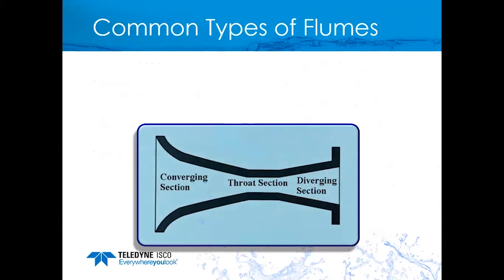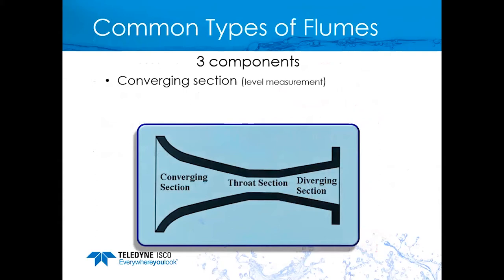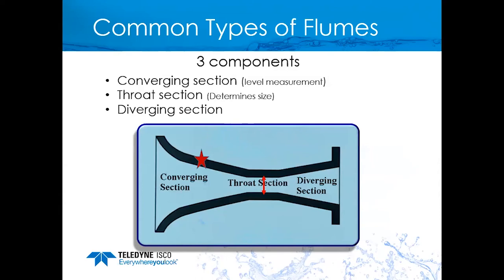The other type of primary device is a flume. The three components are the converging section — the approach side where level measurement is taken — the throat section, which determines the flume size and is measured across the narrowest part; and the diverging section where water exits. When ordering a flume, specifying your technology — bubbler, submerged probe, or ultrasonic — allows it to be built into the flume at the correct measurement point. The narrower throat accelerates water, making the flume essentially self-cleaning.